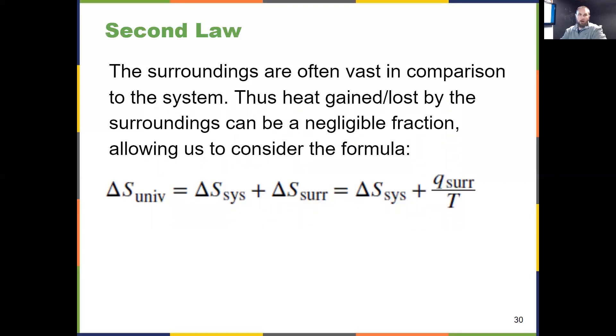I can do adjustments to that formula. ΔS_univ equals ΔS_sys plus ΔS_surr. Those surroundings are everything with the exception of the system - if you're the system, your surroundings aren't just the room, they're everything else. The heat gained or lost by the surroundings is often a negligible fraction, allowing us to adjust the formula: we've changed ΔS_surr to q_surr/T.